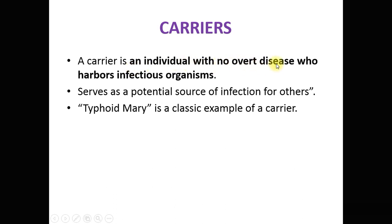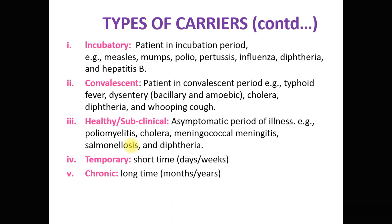A carrier is an individual having no overt disease — that means signs and symptoms are not seen — but this person harbors the pathogen and is a potential source of infection for others. Typhoid Mary is a classic example; she was a carrier for almost 26 years and was responsible for hundreds of cases of typhoid. Carriers can be classified into different types: incubatory, convalescent, healthy or subclinical, temporary, and chronic. Incubatory means the patient is in the incubation period — the pathogen is present and multiplying but has not yet shown symptoms — for example, measles, mumps, polio, influenza, diphtheria, and hepatitis B.